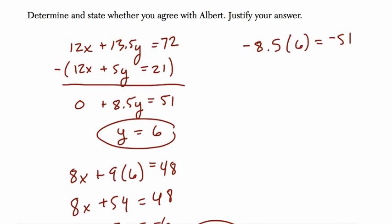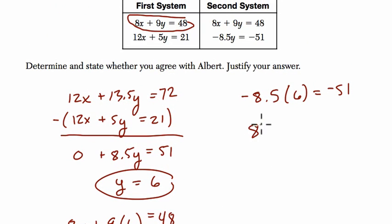Okay, so does x also work here? So let's try it. 8 times negative 3 fourths plus 9. I'm using this equation here. And again, I'm just plugging in the x and y values because if this solution works for both equations here, I want to see if it works for both equations here. 9 times 6, y is 6, that should equal 48.